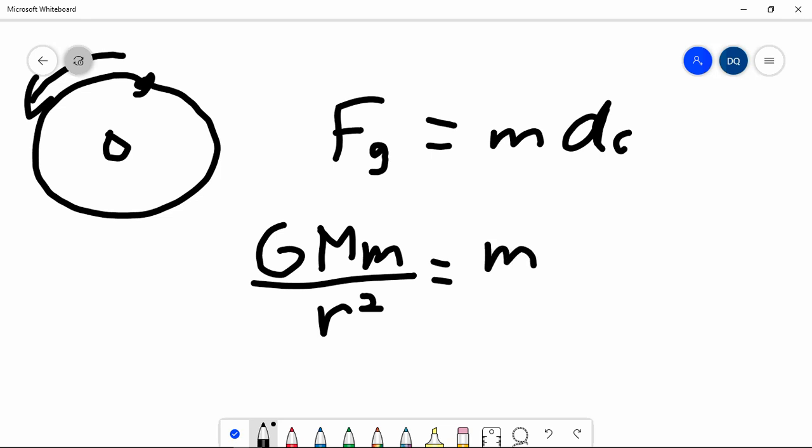And that's equal to the mass of the Moon times its acceleration. This is really just Newton's second law. Net force equals mass times acceleration. The acceleration towards the center of an object moving in a circle is V squared over R.